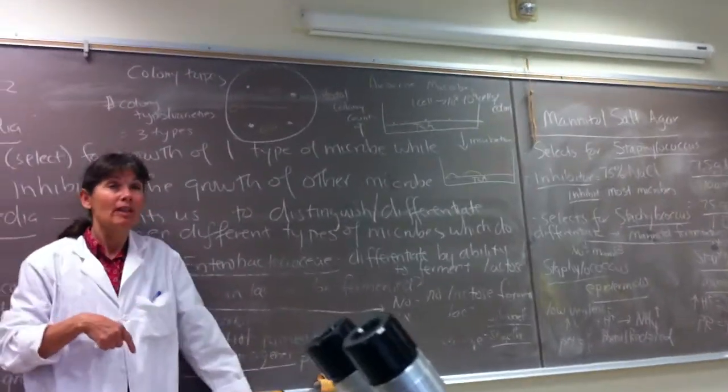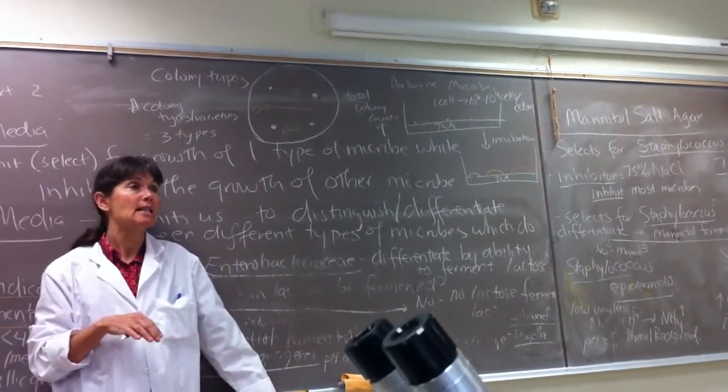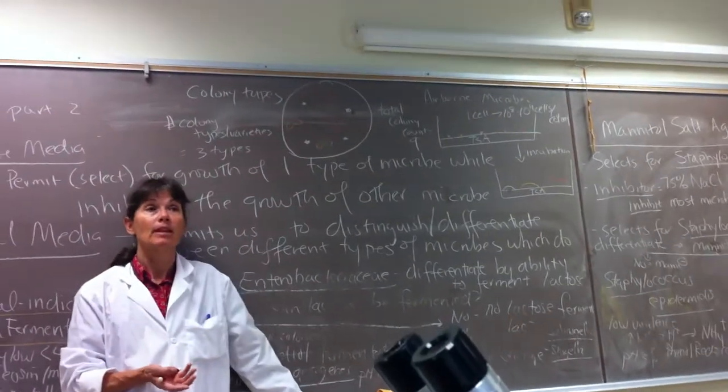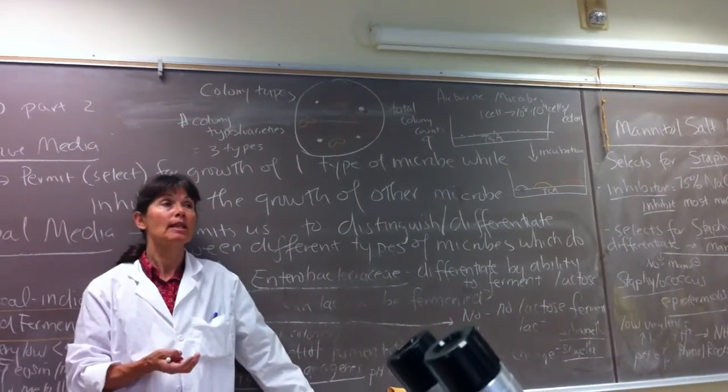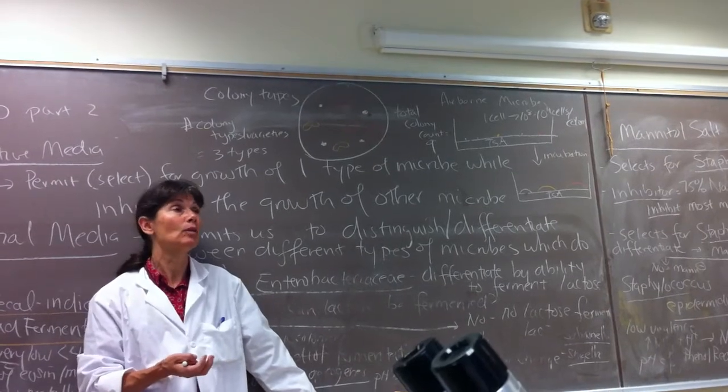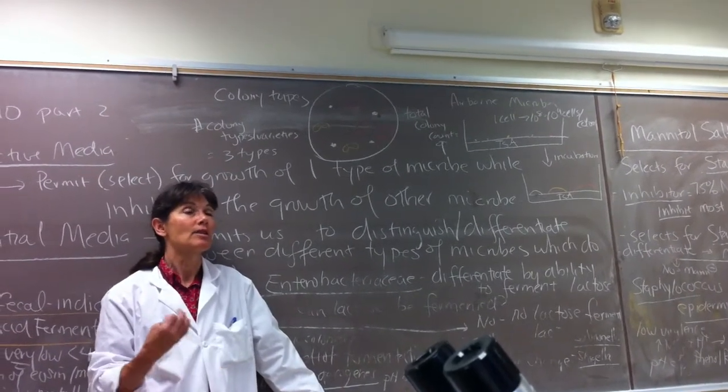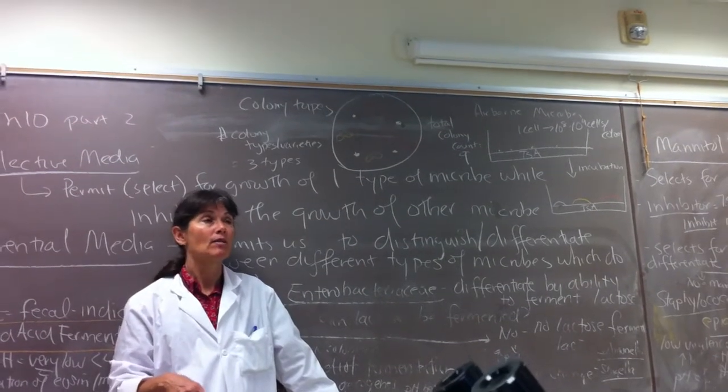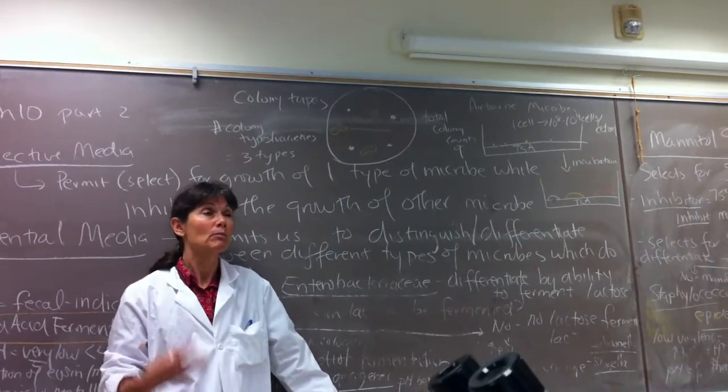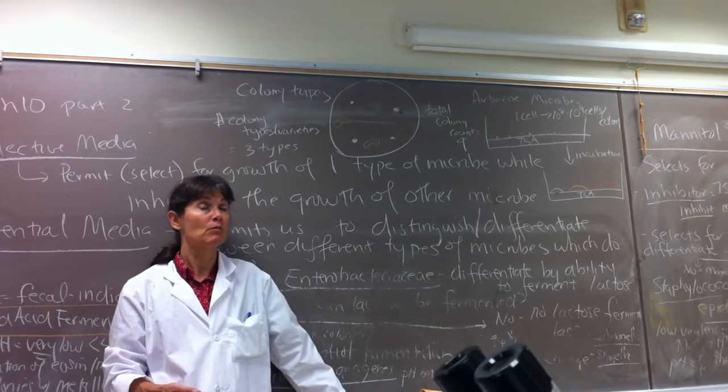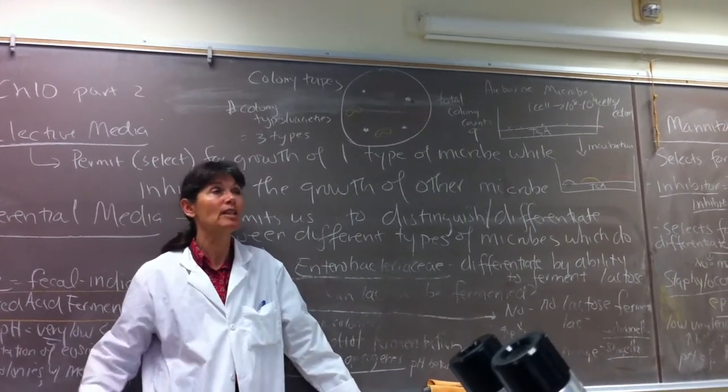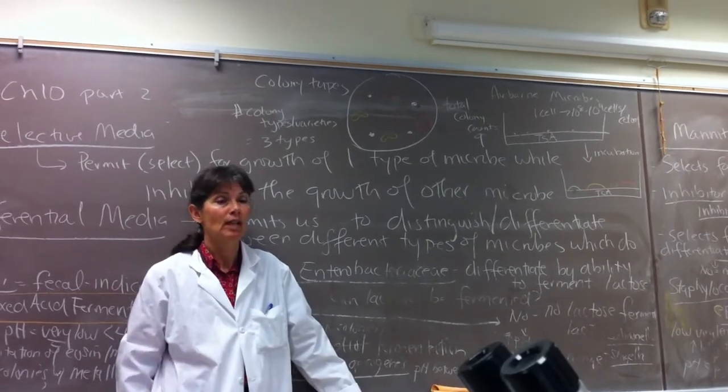Now we are presuming that you'll have more colonies and a greater variety of types on the TSA medium. And the reason is the Saborods media is selective for fungi. So the TSA media should have both bacteria and fungi growing on it. The Saborods plate, we would predict that most bacteria will be inhibited. They won't be able to grow. On the Saborods, we would predict most of those colonies will be fungal, either yeasts or molds.